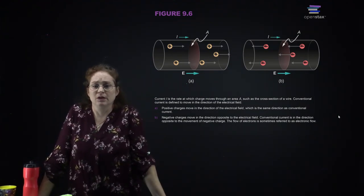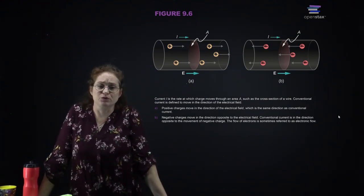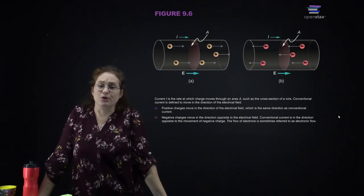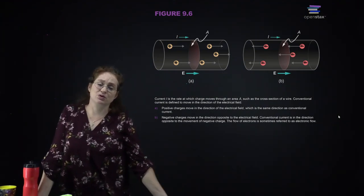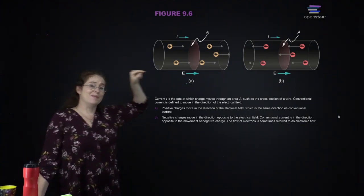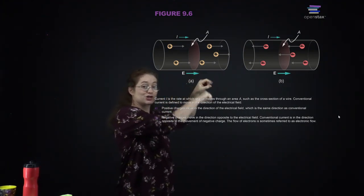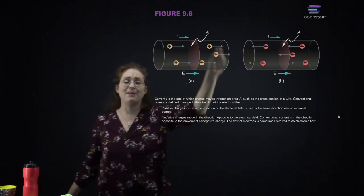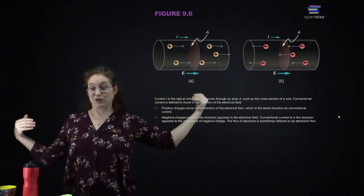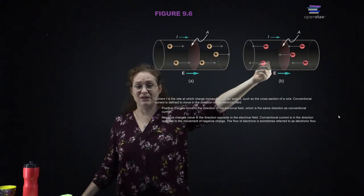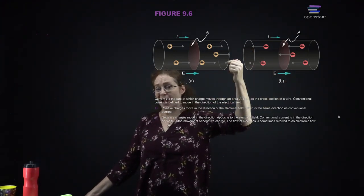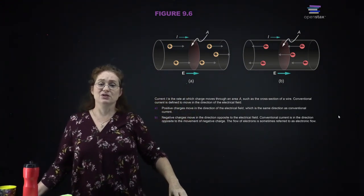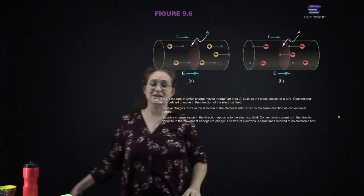Current is the rate at which charge moves through a given area, such as a cross-section of a wire. Conventional current is defined to move in the direction of the electric field — we're imagining what positive charges are doing. Negative charges actually move in the opposite direction of the electric field; this is sometimes referred to as electron flow.